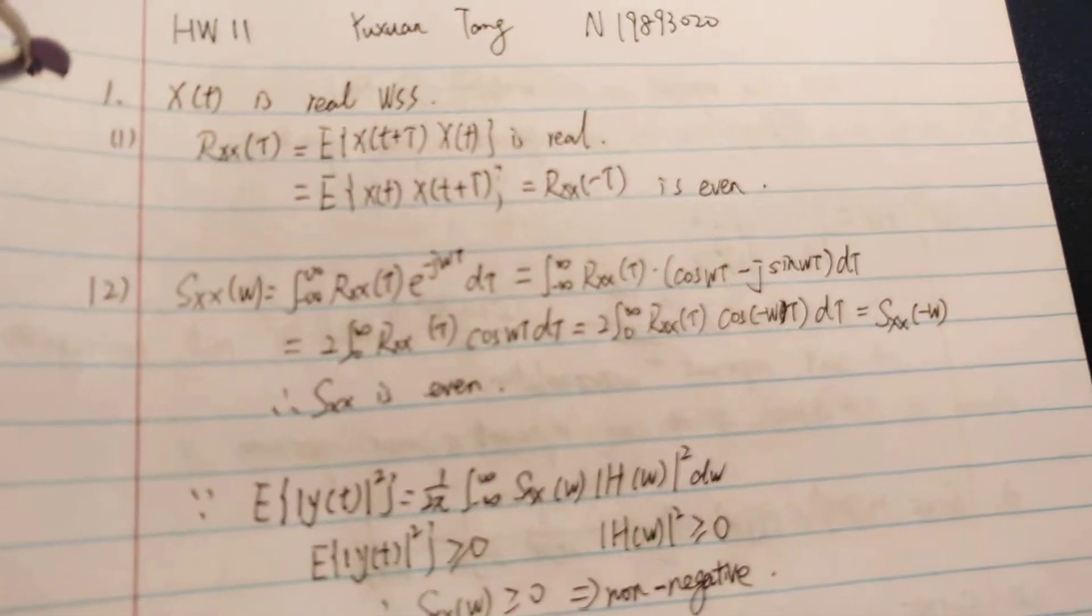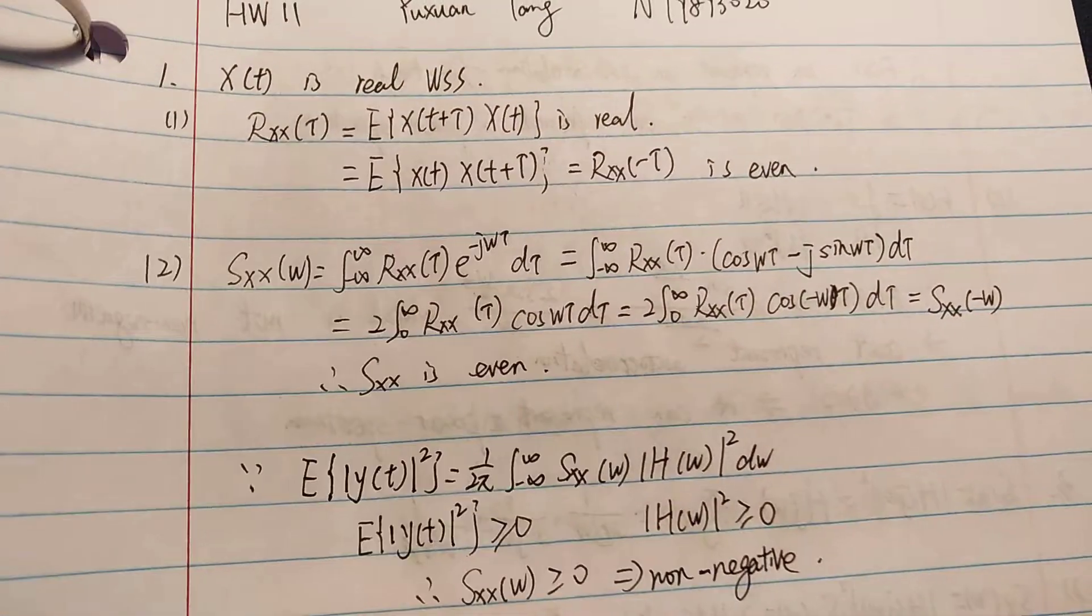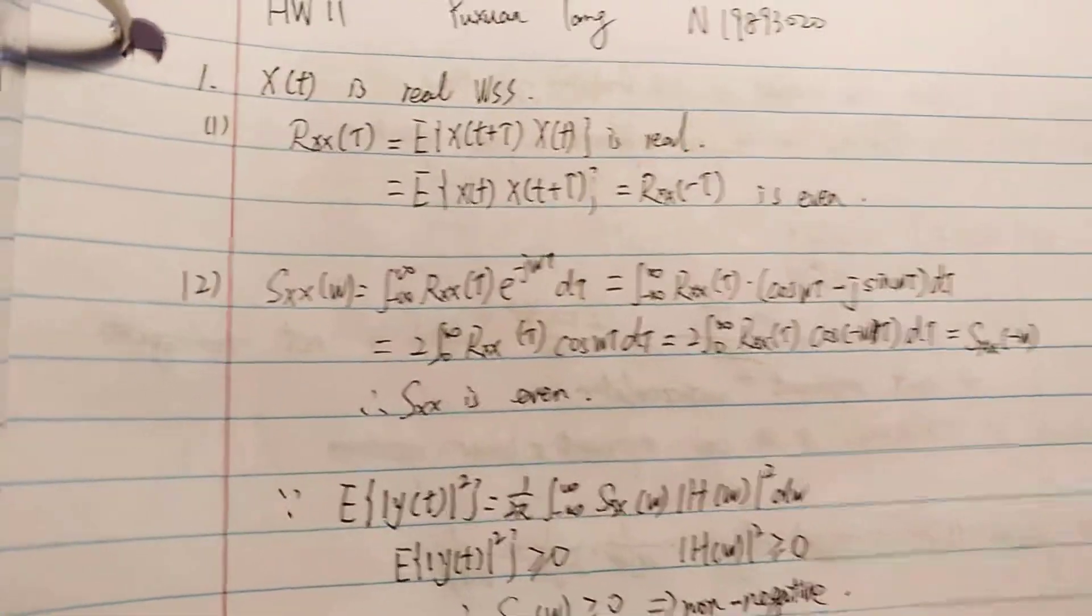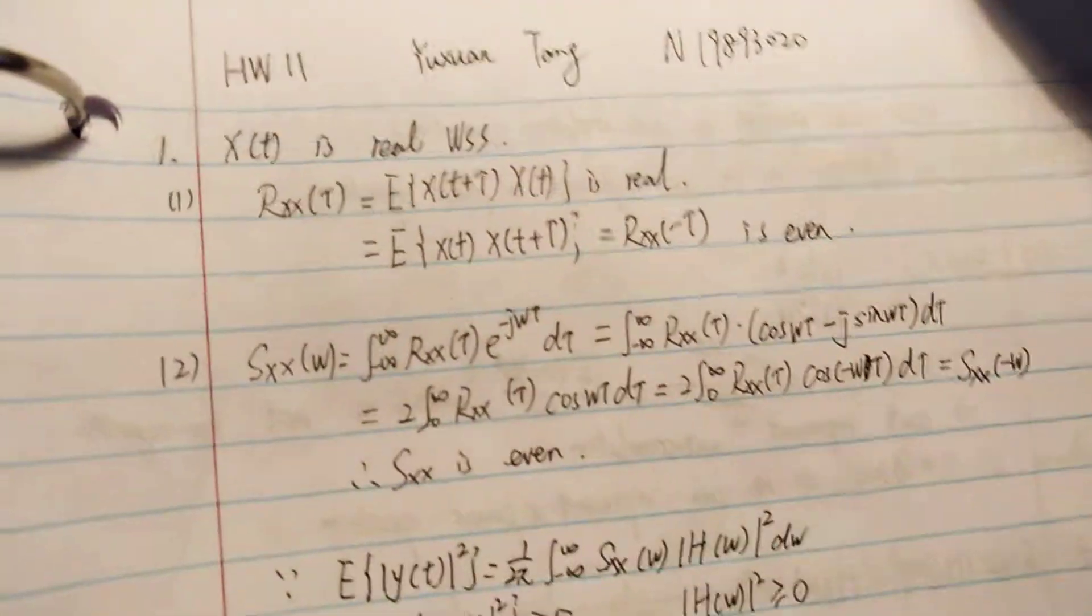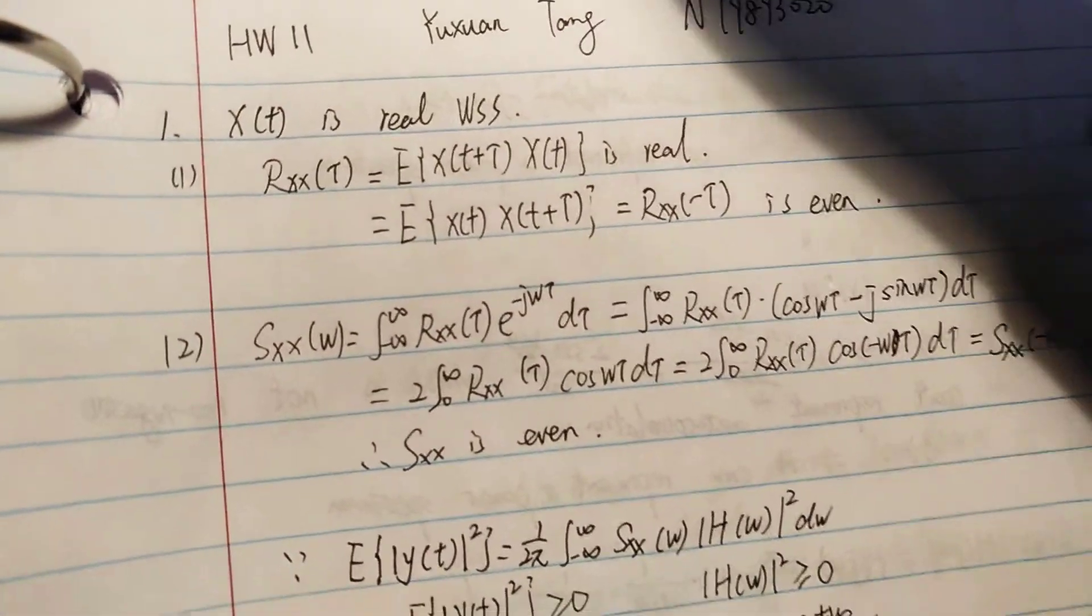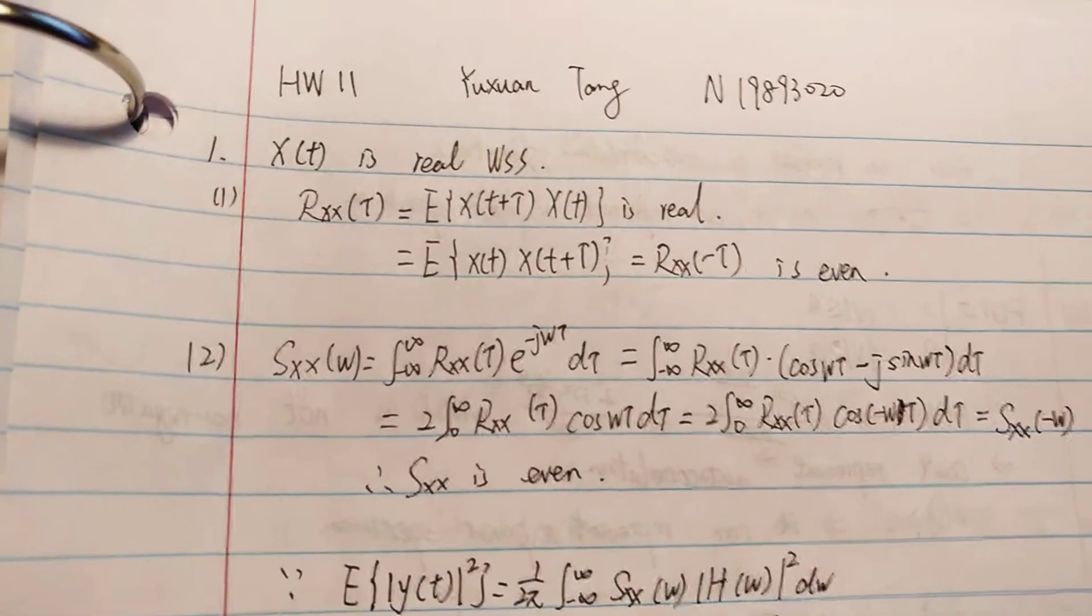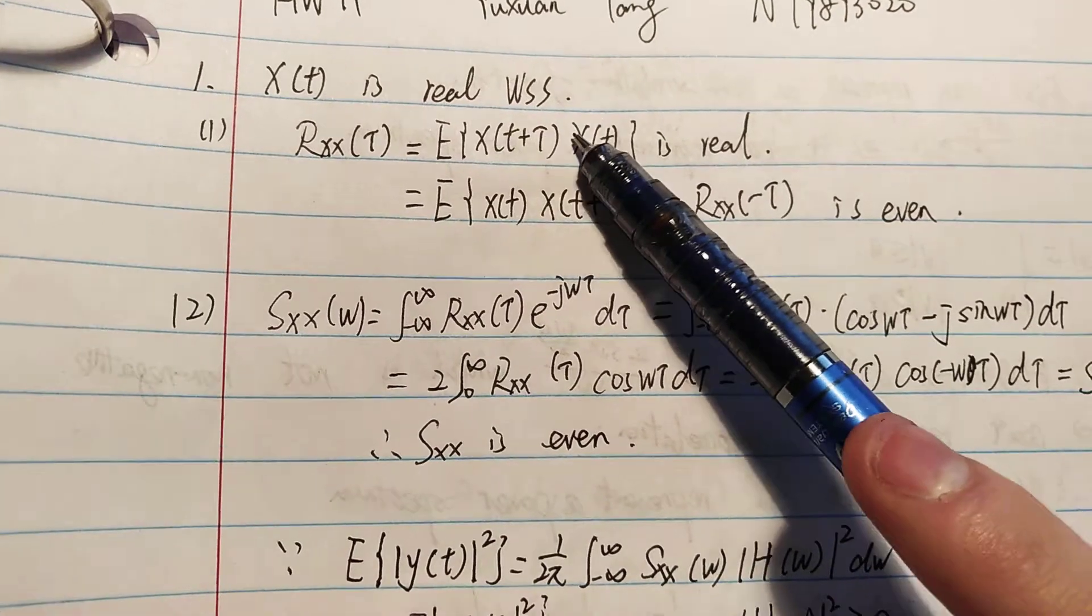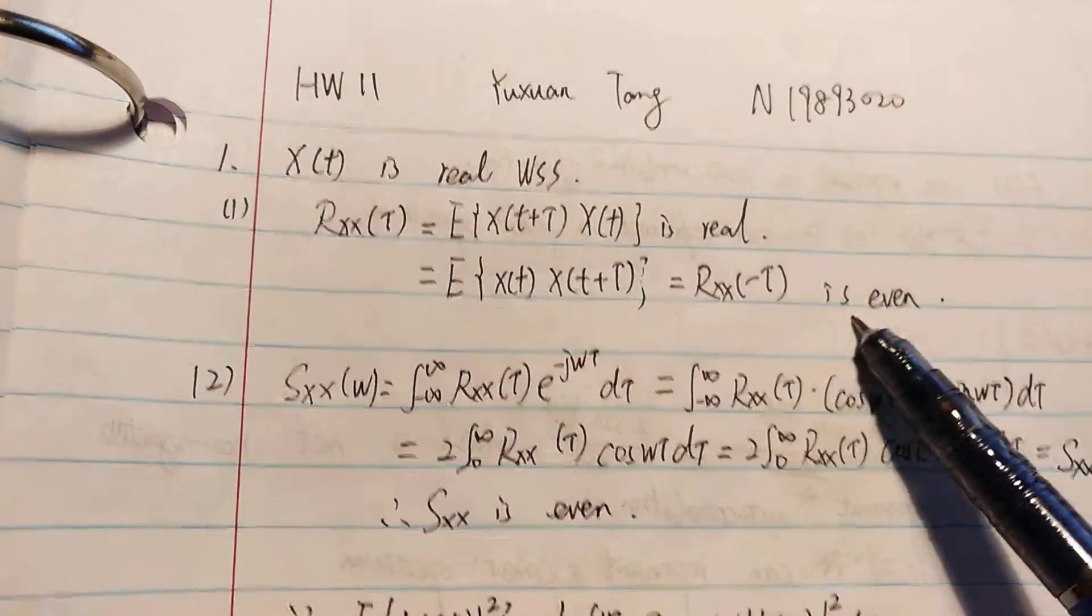Here, because Xt is real WSS, so we can write the Rxx tau in this form. Which we can easily get the Rxx tau is real and we can change the direction, change the position here. So this is Rxx minus tau, so it is even.